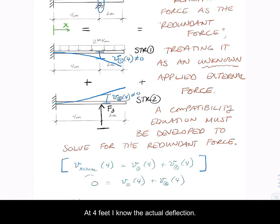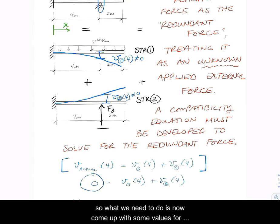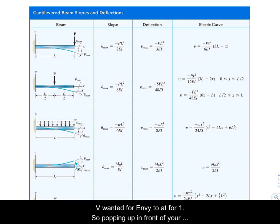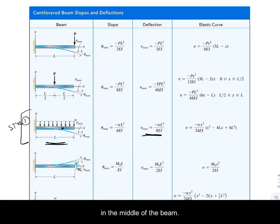And the reason why I'm going to highlight again the fact that I'm dealing with four feet is because at four feet I know the actual deflection in the beam has to equal zero. So what we need to do is now come up with some values for v1 at four and v2 at four. So popping up in front of your deflection tables, we would recognize that structure one looks very similar to this picture.